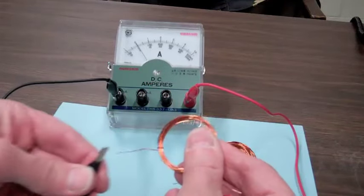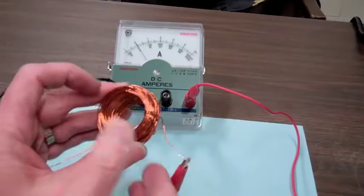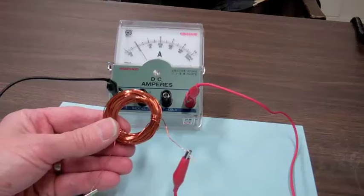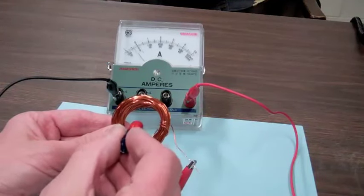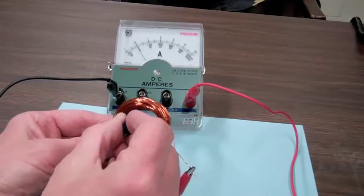And now let me connect the hundred loop coil. And I will start by moving the magnet in very slowly. You see a deflection to the right, pull it out to the left. If I go in quickly, you see a much greater deflection.